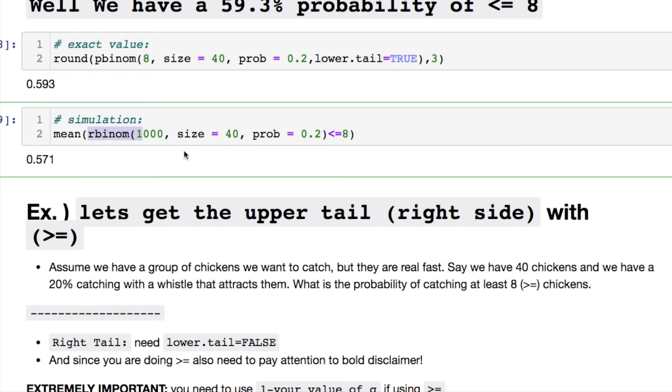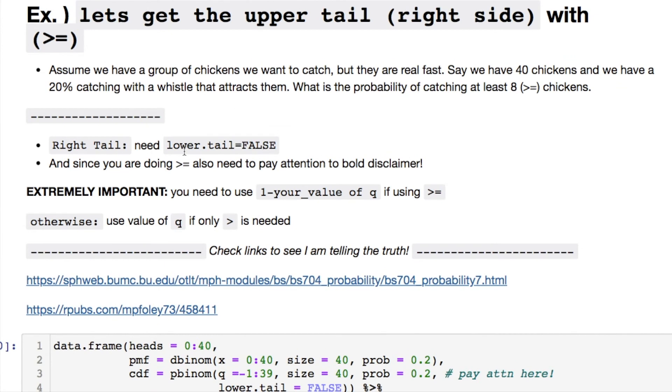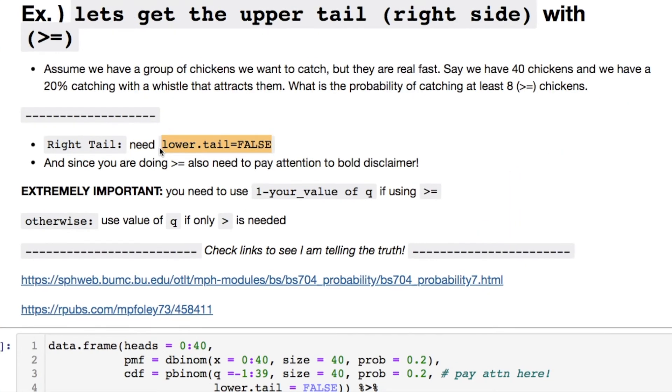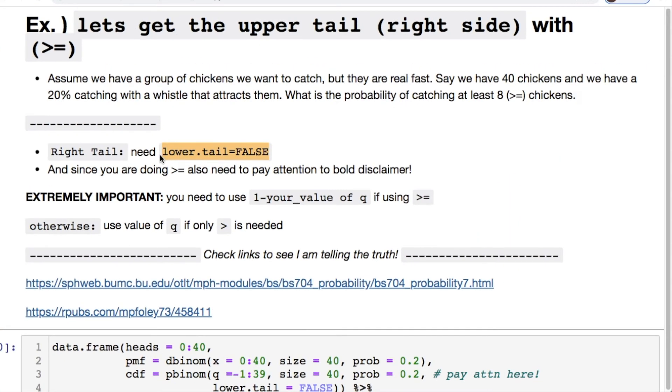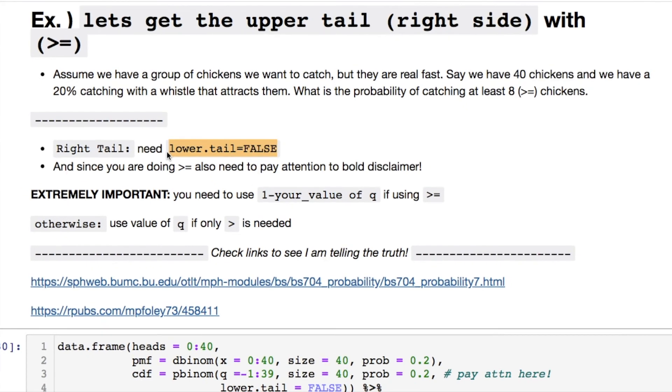Then let's do an upper tail which is your right side, meaning that we need to now do lower.tail equals FALSE. And let's use this problem. It's just a joke of course. Assume we have a group of chickens we want to catch but they're really fast. Say we have 40 chickens and we have a 20 percent chance of catching them with a whistle that attracts them. What's the probability of catching at least eight chickens? Meaning we want eight or more.